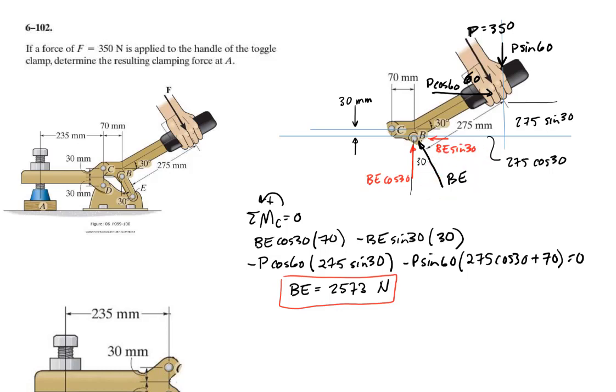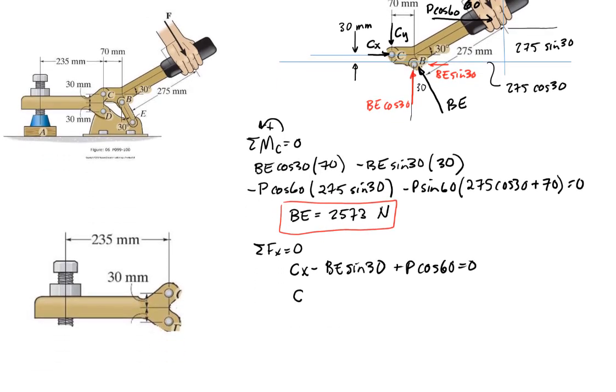Once I find BE, what I'm really looking for - I forgot to draw the CX and CY on my picture, so let's go back to that. Let me add CX and CY. Now that I have all of my X forces defined, I can sum the forces in the X direction. Sum of forces in X equals zero, so I've got CX minus BE sin 30 plus P cos 60 equals zero. Here I can now solve for CX, and that is basically getting very close to what I need to get my clamping force.